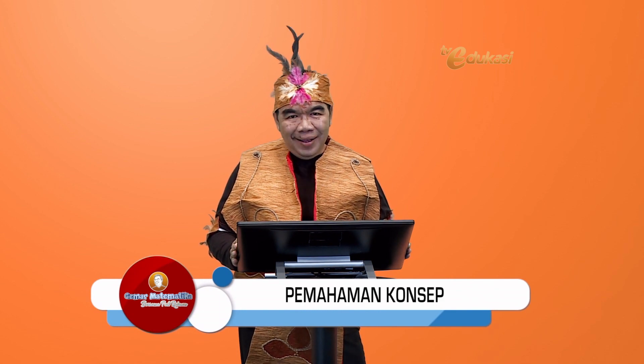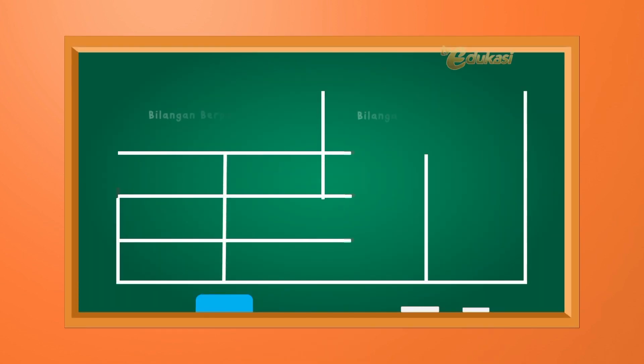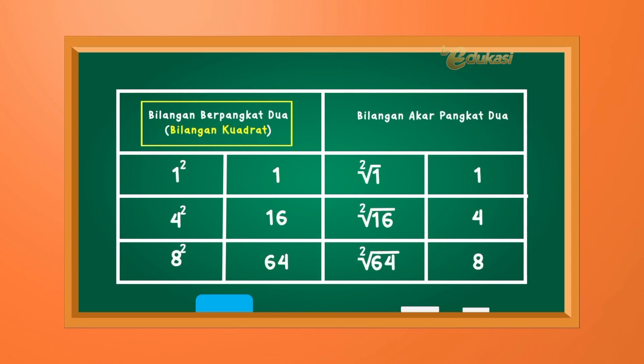Baik, perhatikan penjelasan berikut ini. Anak-anak, Bapak akan menerangkan pemahaman konsep tentang akar pangkat dua. Perhatikan penjelasan berikut ini, lihat di tabel. Bilangan pangkat dua: misalkan, satu kuadrat sama dengan satu. Empat kuadrat sama dengan enam belas. Delapan kuadrat sama dengan enam puluh empat.